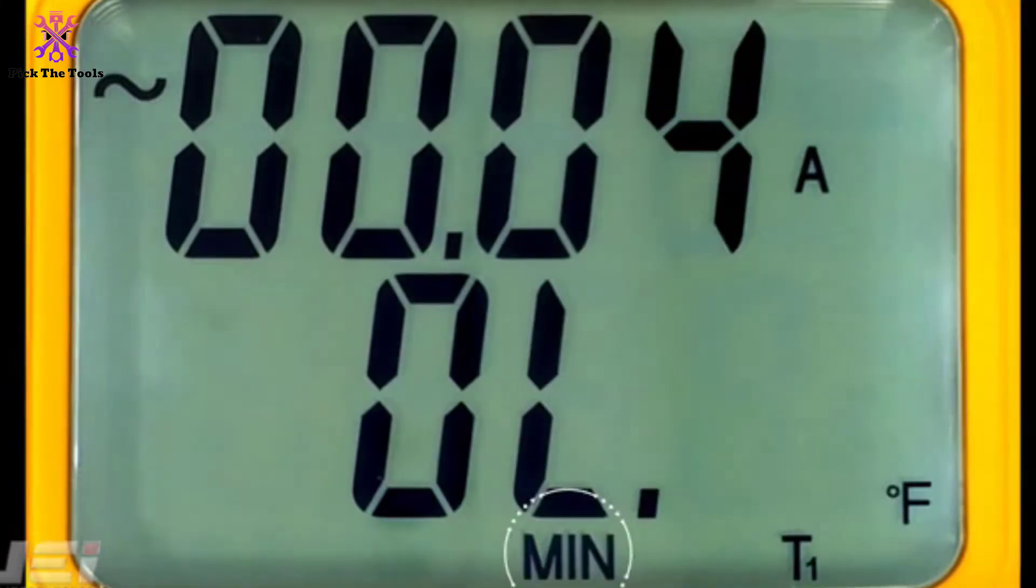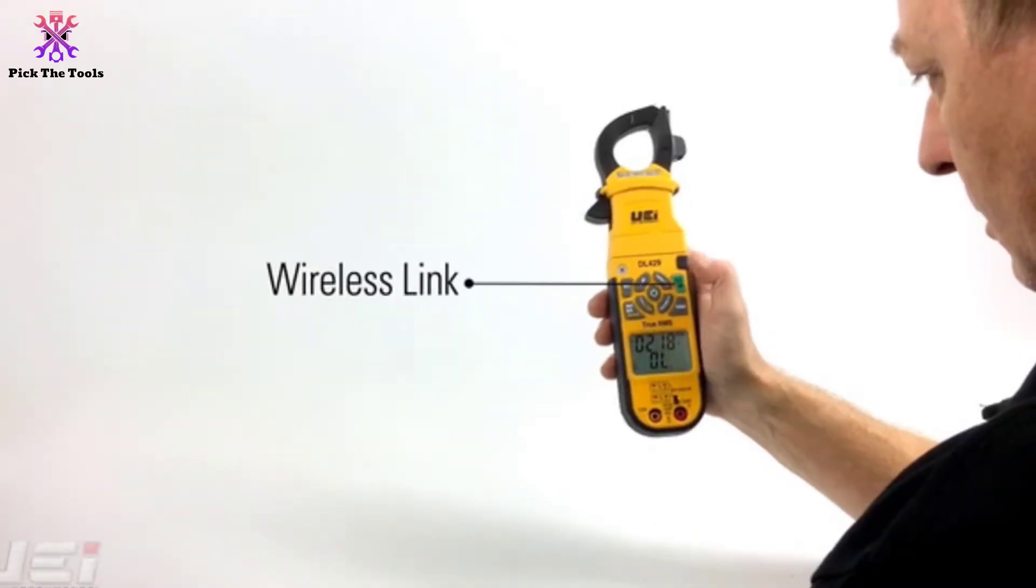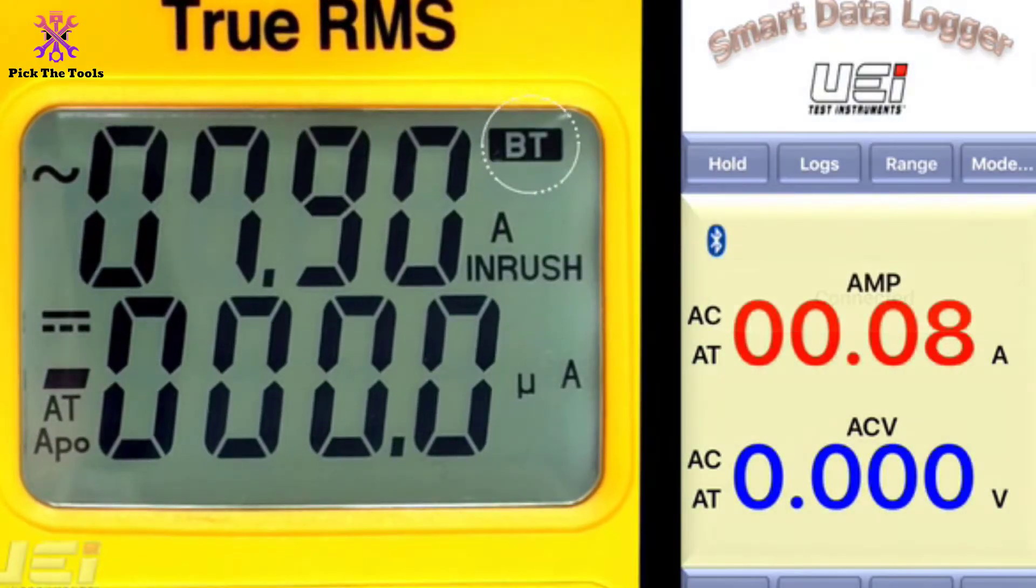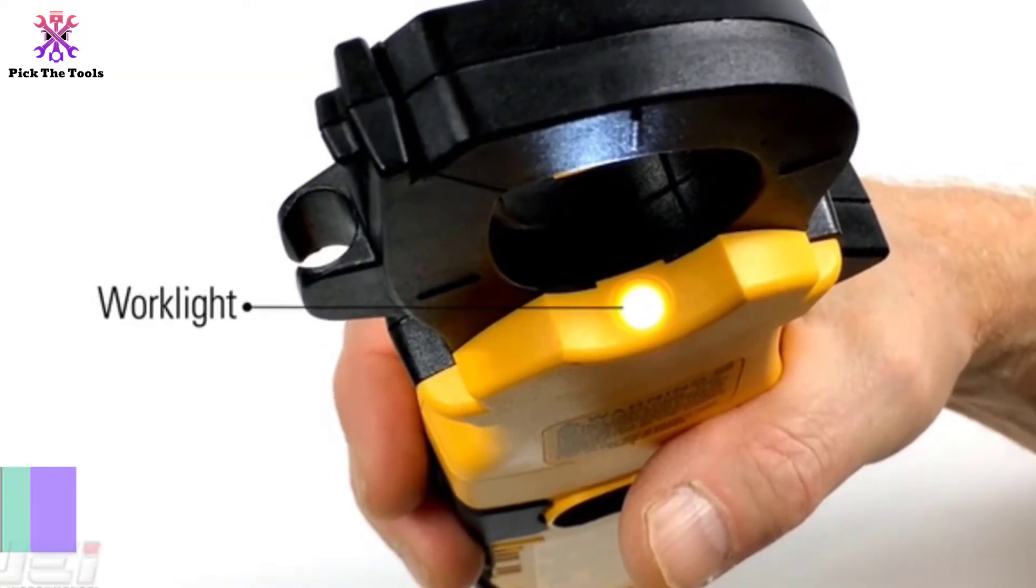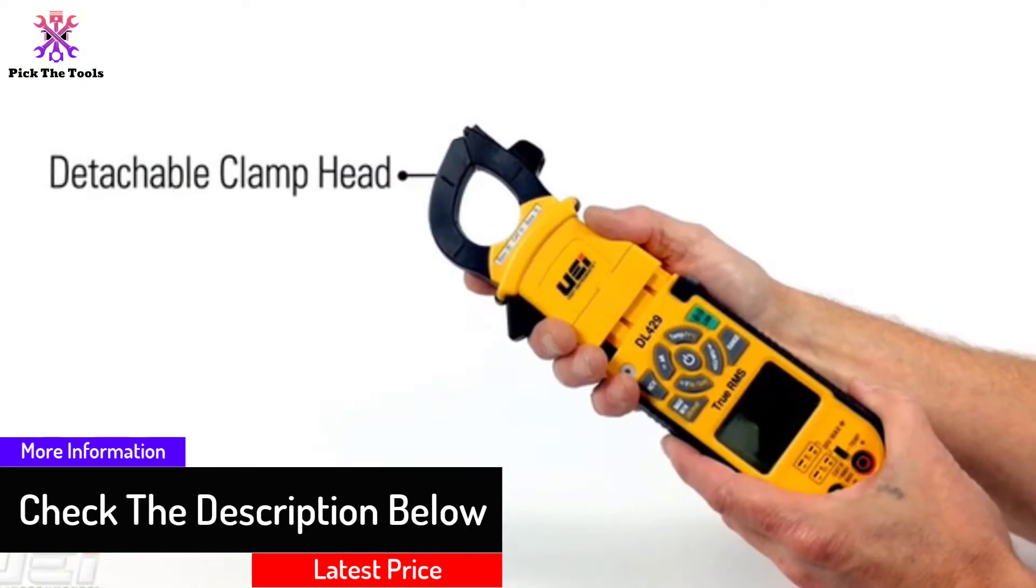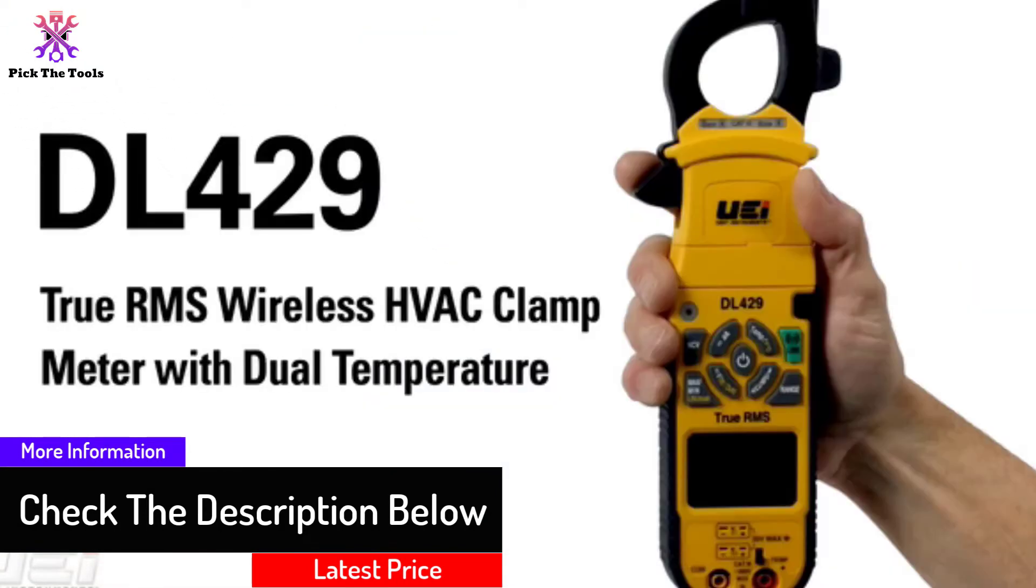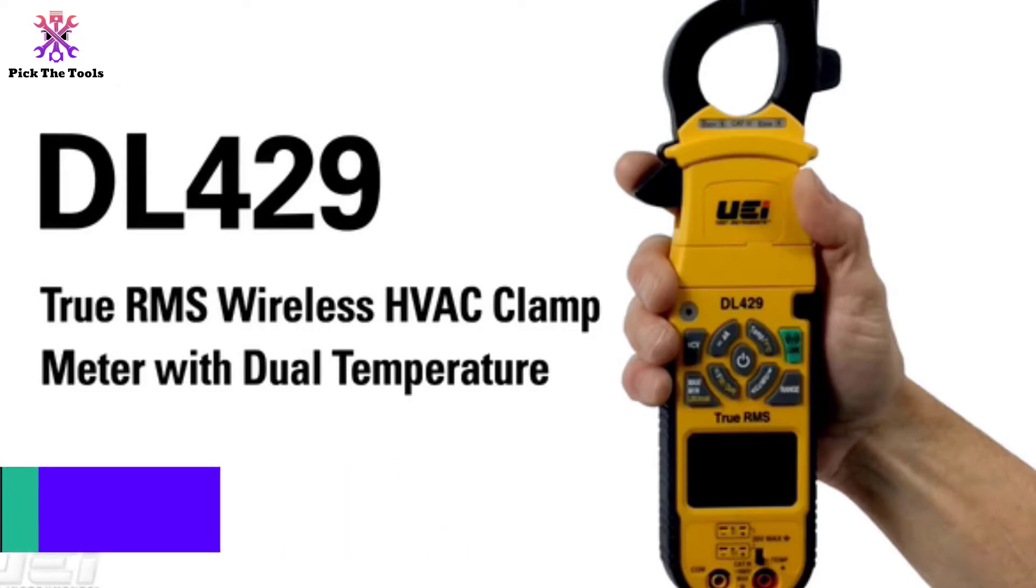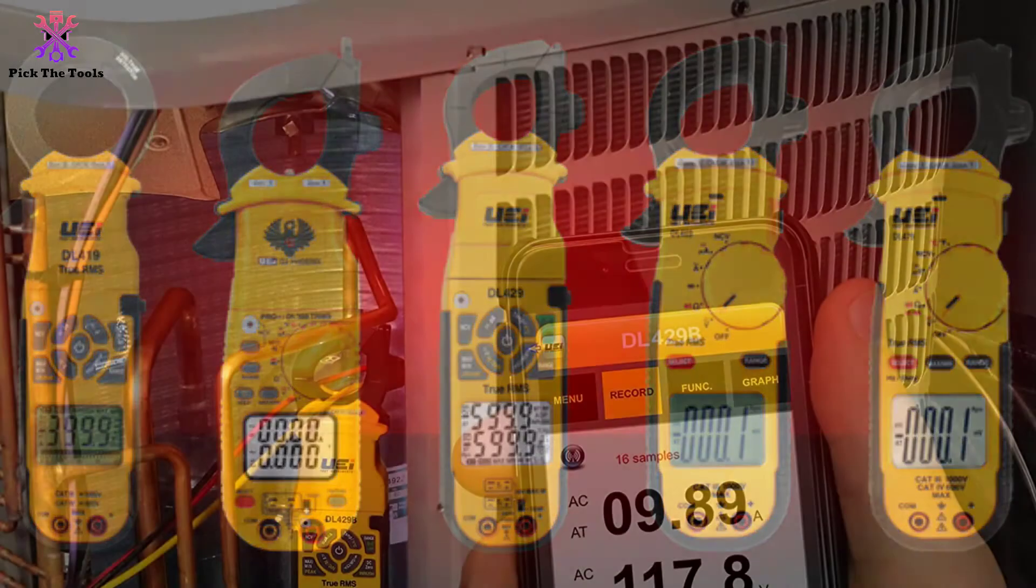And their UEI DL-429B True RMS Clamp-On Meter offers better features, functions, and safety in an updated housing with wireless capability. It is a complete meter with the precision of True RMS and simultaneous readings of the differential temperature functionality, which is a handy feature for HVAC technicians.